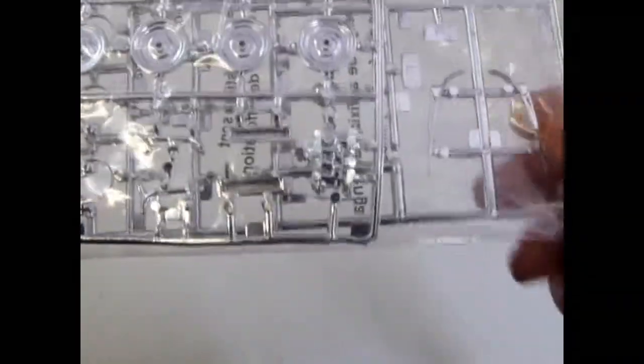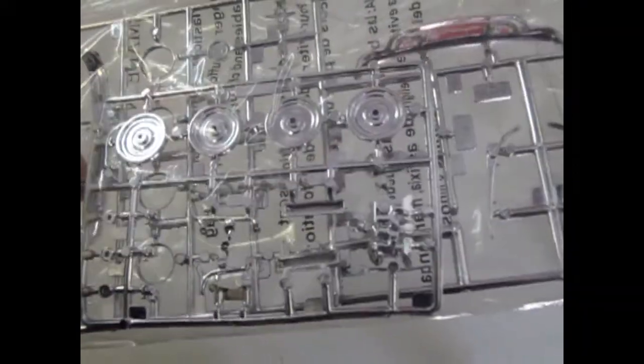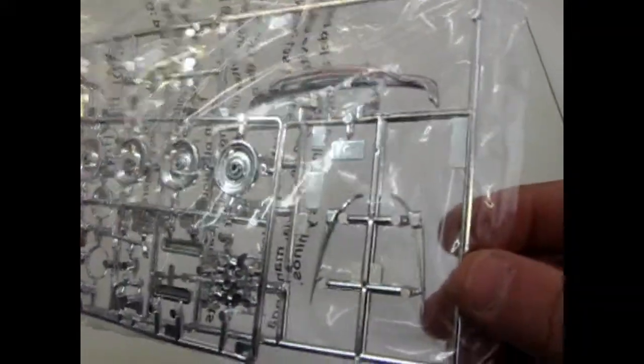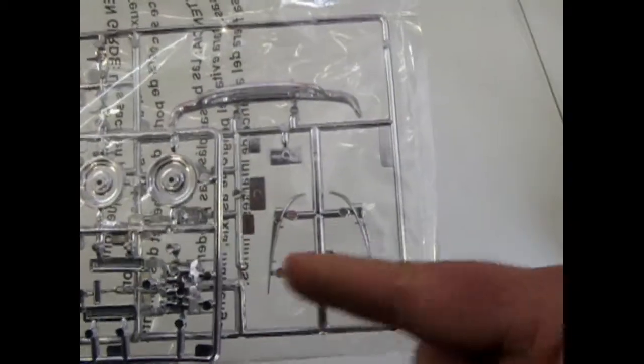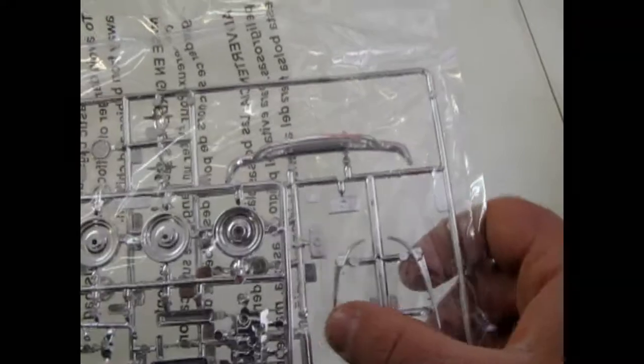And here we have the chrome, which again is just in the bag. But you can see that it's a nice chrome plating job. There's also some hood emblems. Oh, these are the tail lights, actually. They go along the back, on the top of the rear fenders.